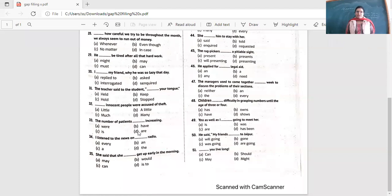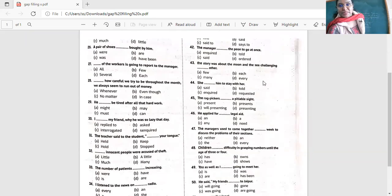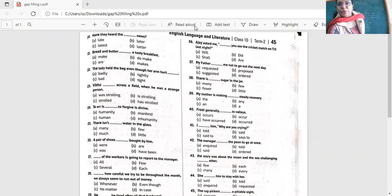Yes, she said that she, dash, get up early in the morning. She said that she, she can do something. It's her ability. What is it? She said that she, can get up early in the morning. Could, yes, it was in the ability to get up early in the morning. She said that she can, can, can. Ajay asked me, dash, you see the cricket match on TV last night? Last night. Last night. Did. Correct.